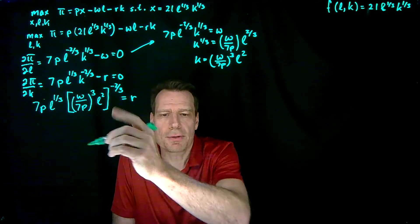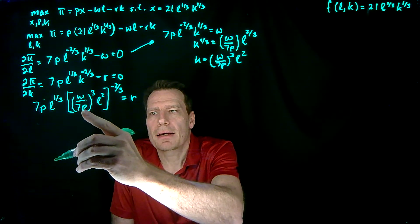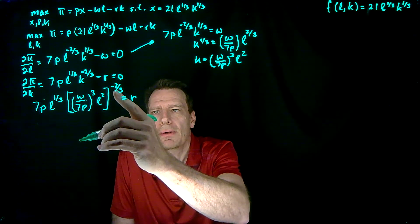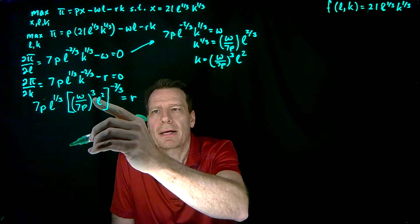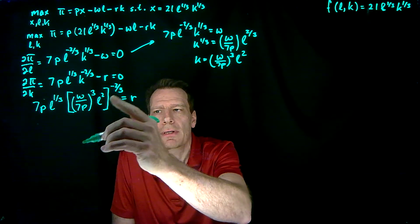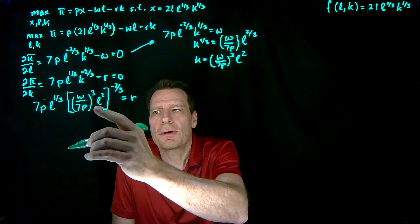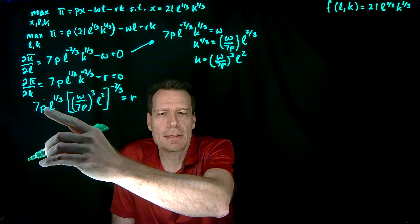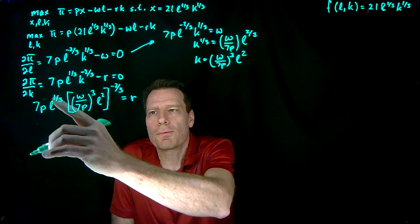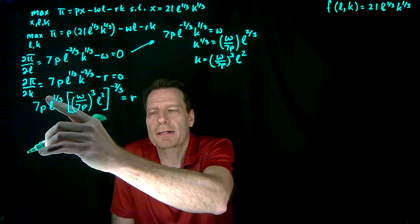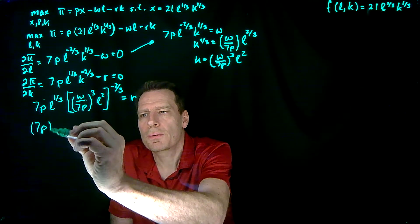Now we have a bunch of things to simplify. We have a 7P here and a 7P to the third taken to the negative two-thirds. So 7P to the third, multiply that exponent three by negative two-thirds, and we get a negative two. So we get 7P to the minus two here and 7P here. Subtracting the minus two from the exponent of one leaves us with 7P to the third.